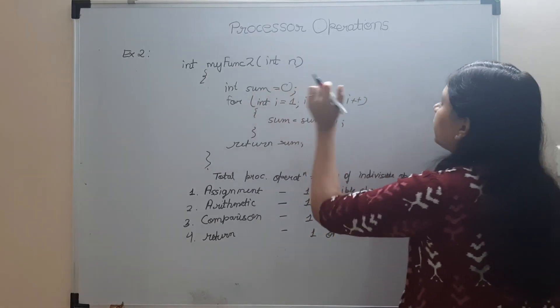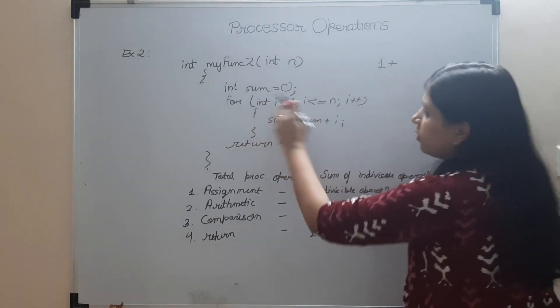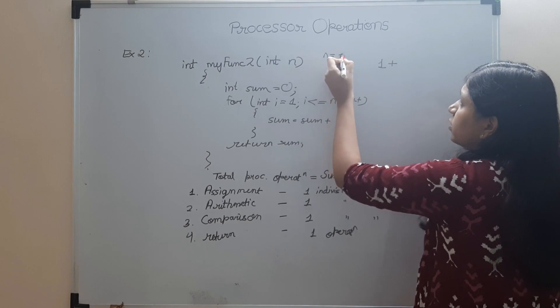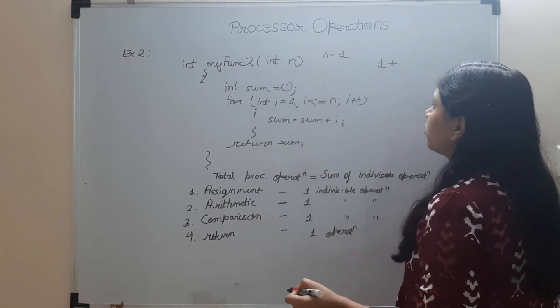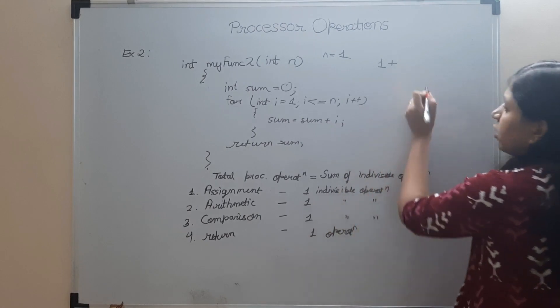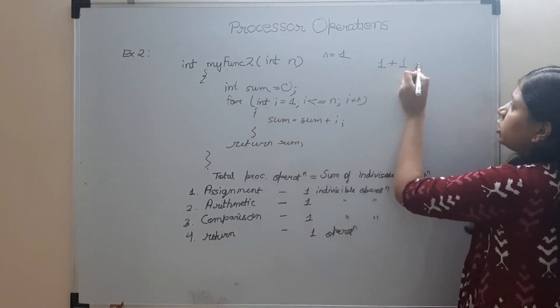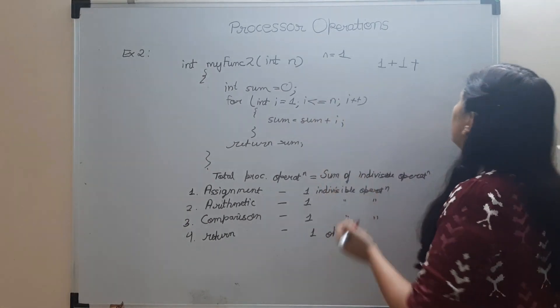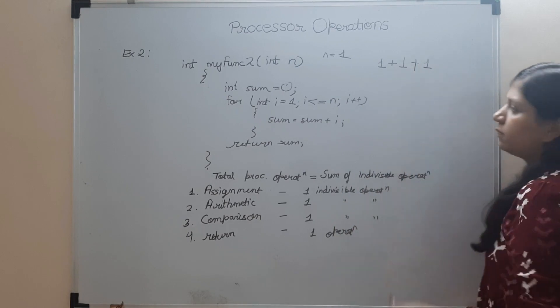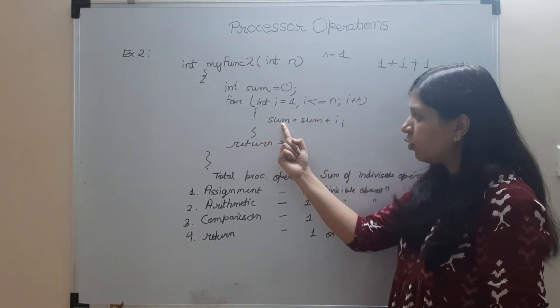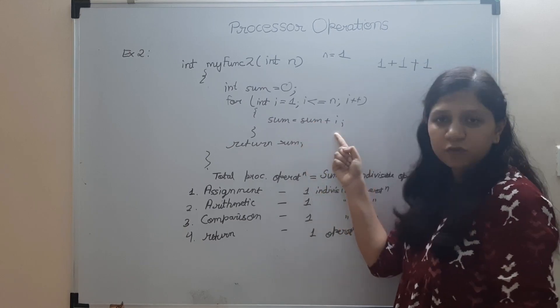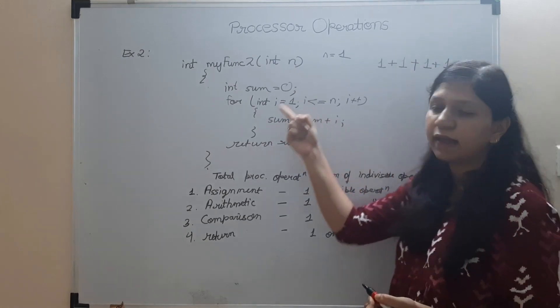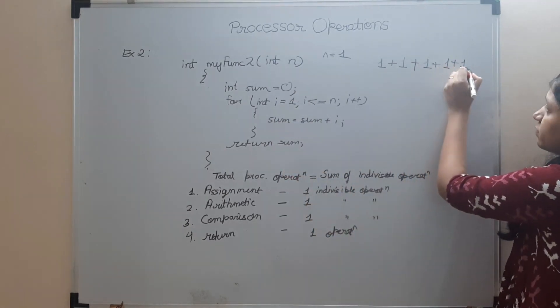So this is the first statement, assignment - one operation. Here, see: int i = 1, first assignment. Let's consider n = 1 for the sake of easiness. Now this statement is going to take one operation. Now i <= n, so 1 <= 1, this comparison is done now and it is going to take one operation. Once this is done, we will enter the loop. sum = sum + i, so 0 + 1, addition, so another plus 1. And then this assignment, so another plus 1. Now once this is done, sum is now 1, and we will come here.